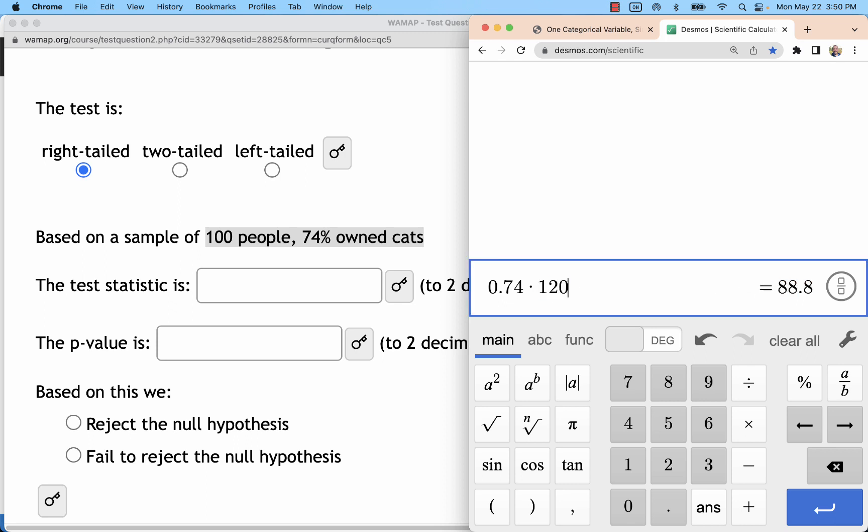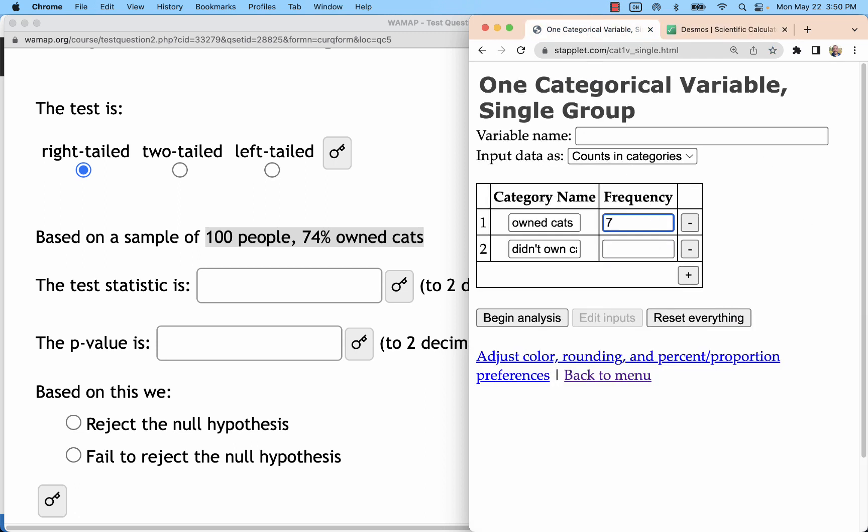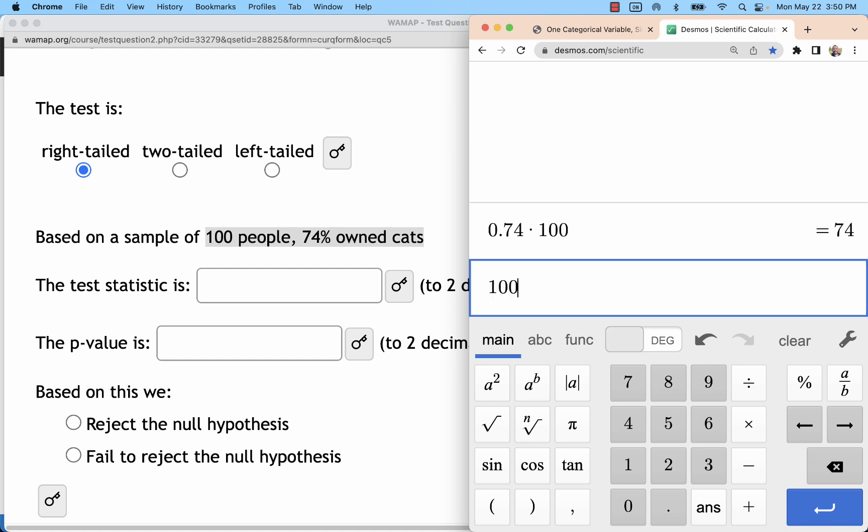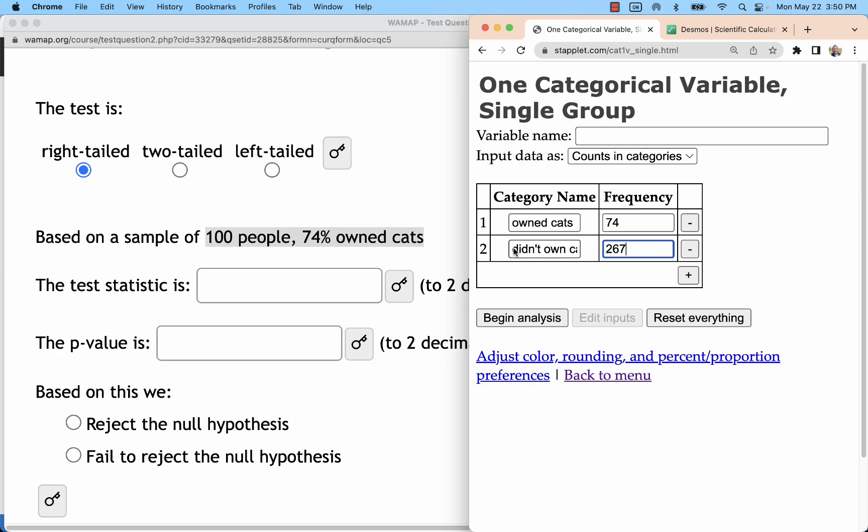For this one, like I said, it's easy. 74% of 100 is 74. And then we need to put the remaining people. So, you would subtract, like I did in the last problem, to find how many remain.